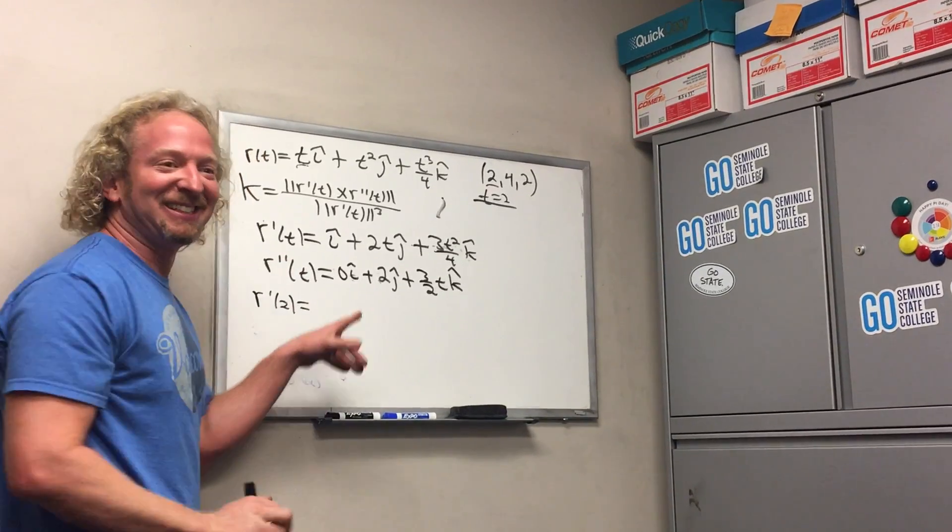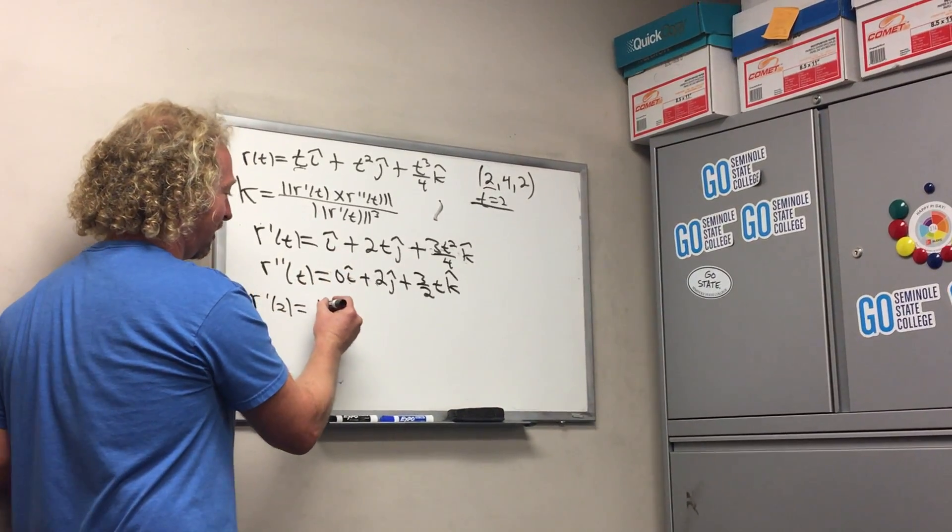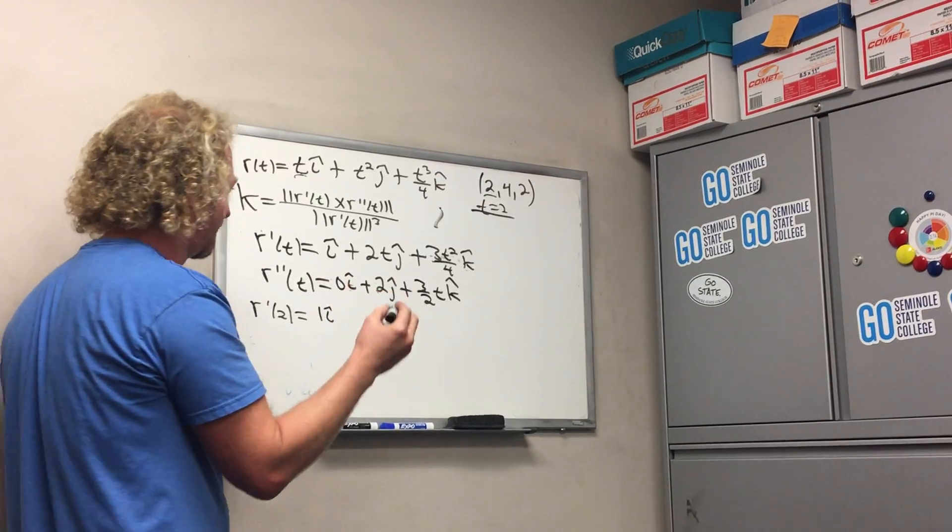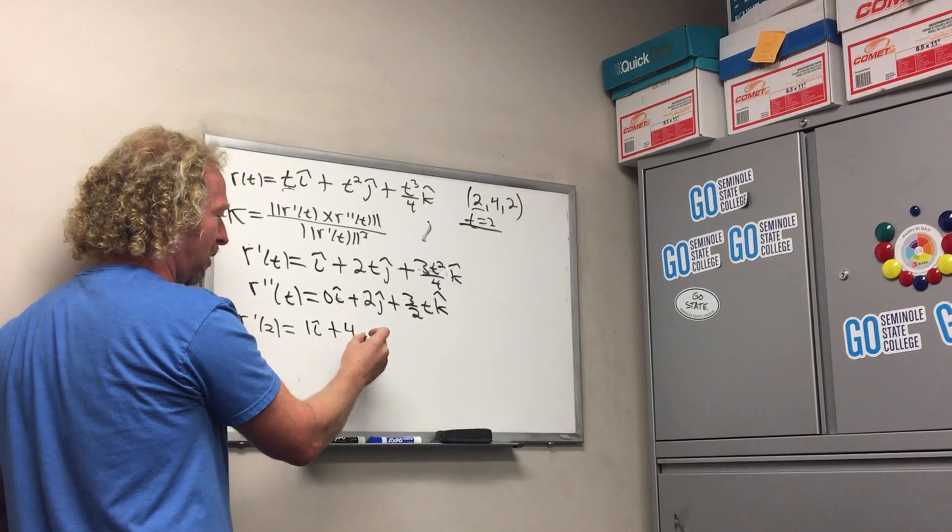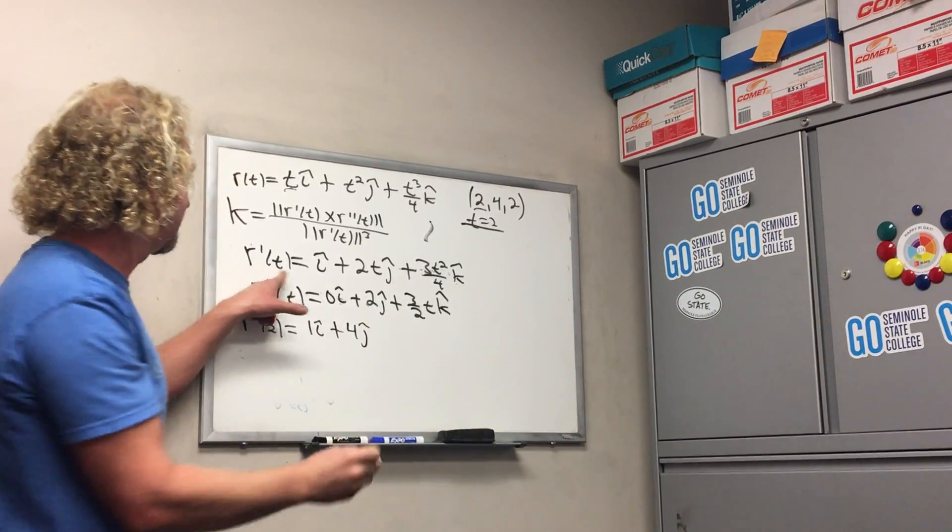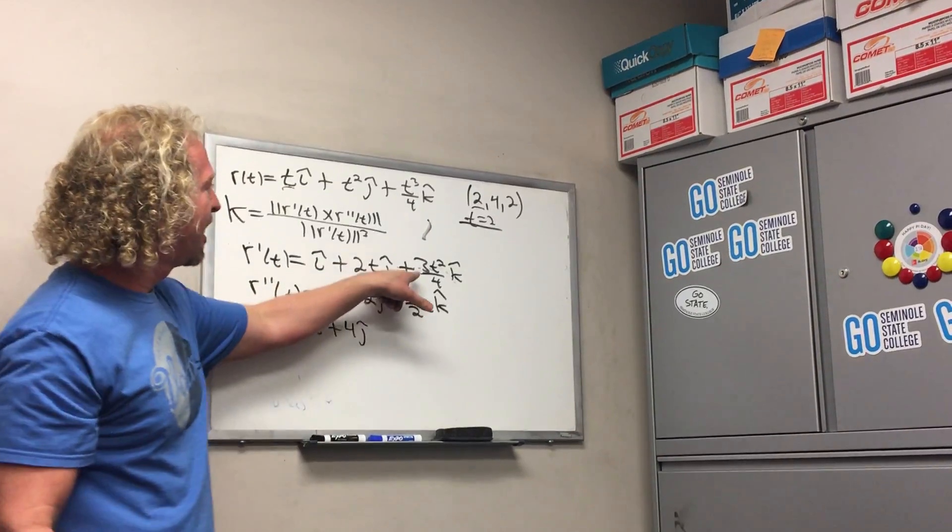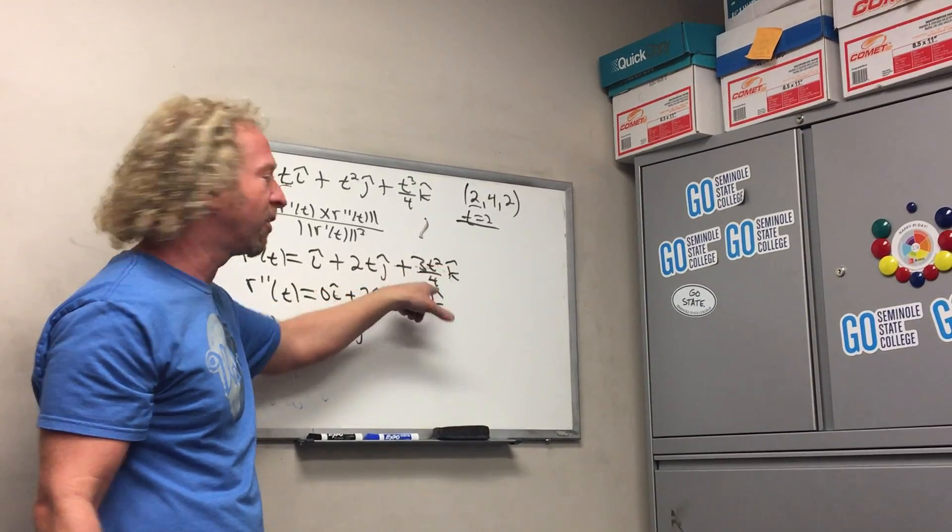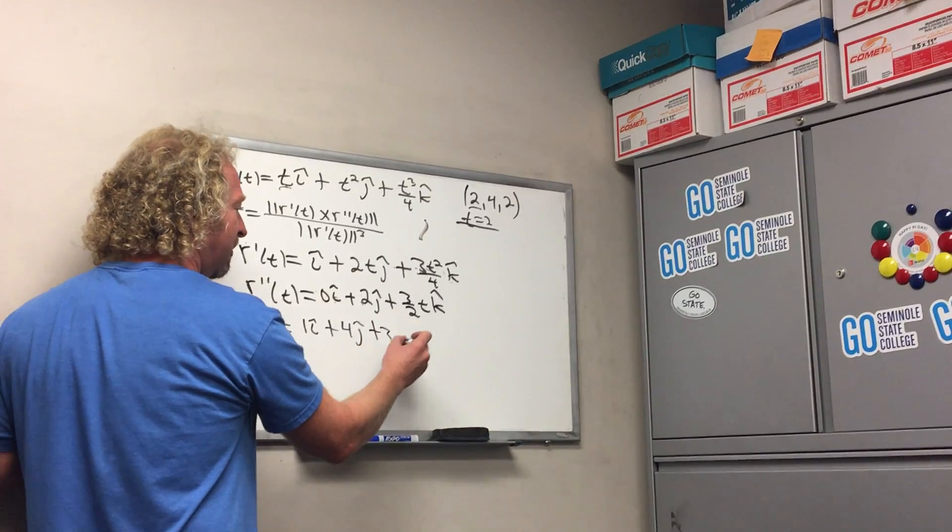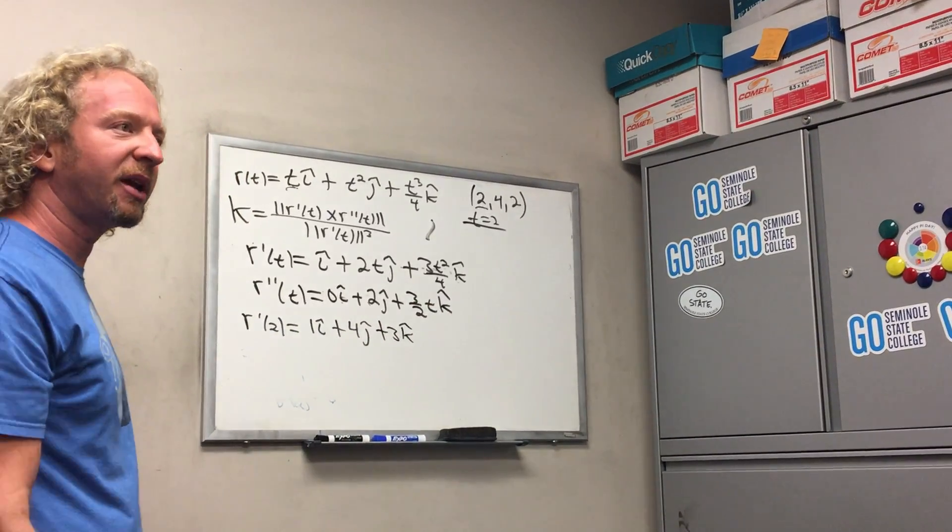Alright, so this is 1 i hat. I know it's silly but I like to plug in the 1. Plus 2 times 2 is 4 j hat. I'm plugging the 2 in here. And then 3 times t², which is 2², so it's 4 over 4. So you just get plus 3 k hat.